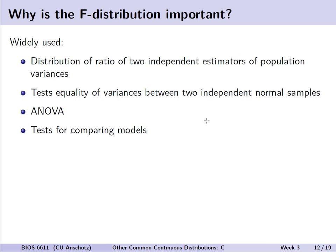The f-distribution is fairly widely used. It describes the distribution of the ratio of two independent estimators of population variances, and it appears in tests for equality of variances between two independent normal samples. It also shows up in analysis of variance (ANOVA), in regression, and in various tests for comparing different models to select which may be more appropriate for a given dataset.